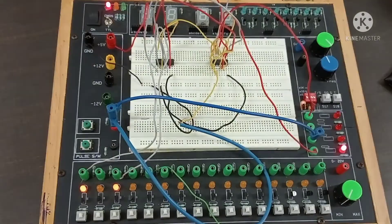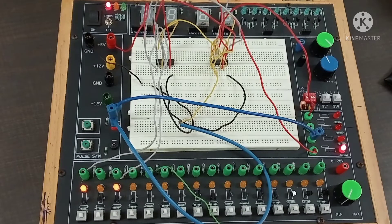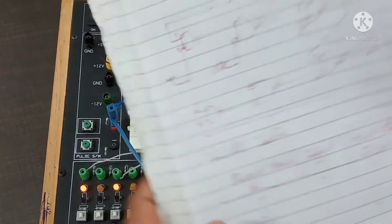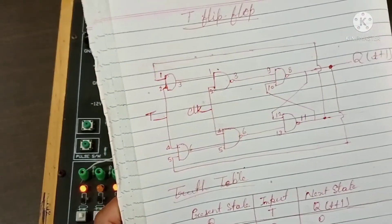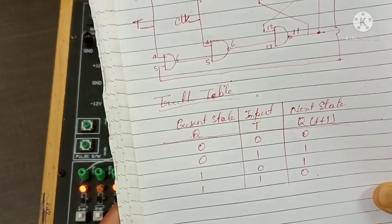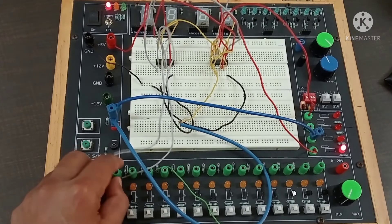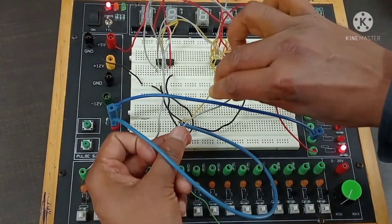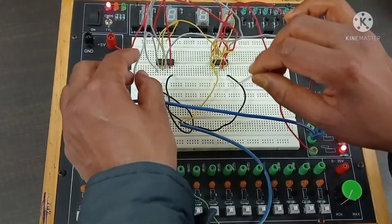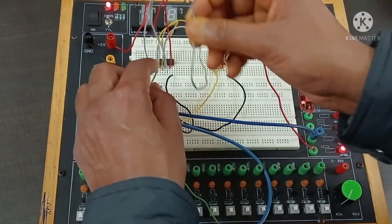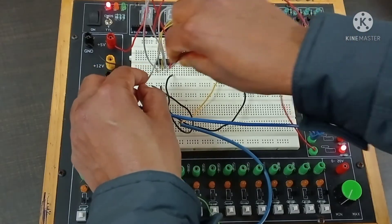Now I will explain the T flip-flop. For T flip-flop there is only one change: J and K have to be joined together. If you join J and K together, it becomes a T flip-flop — that is the only modification and all remaining connections are the same. So I am removing the separate wires and making J and K common.